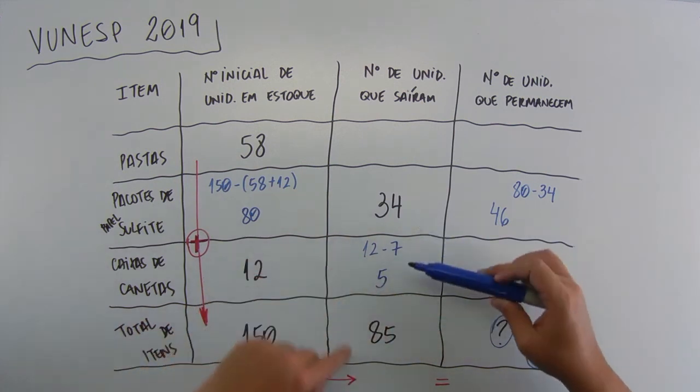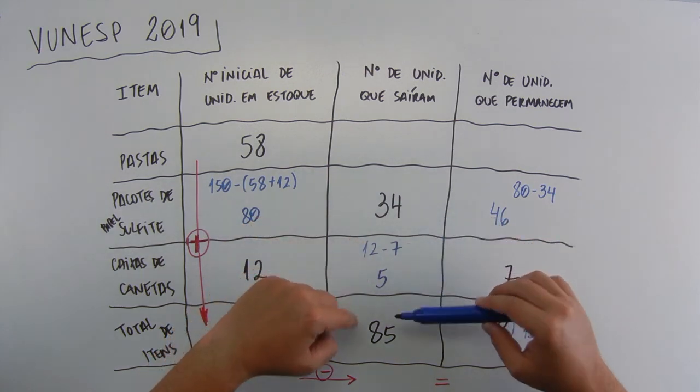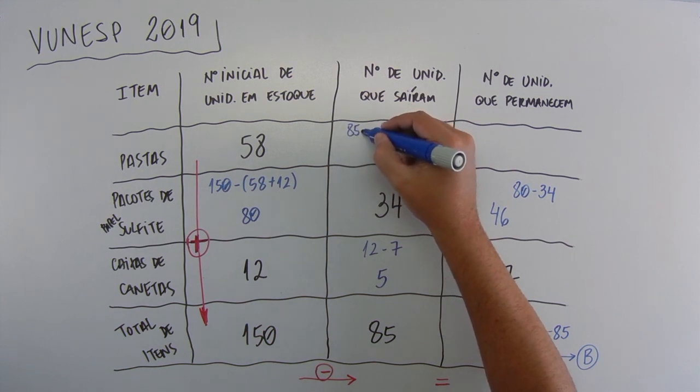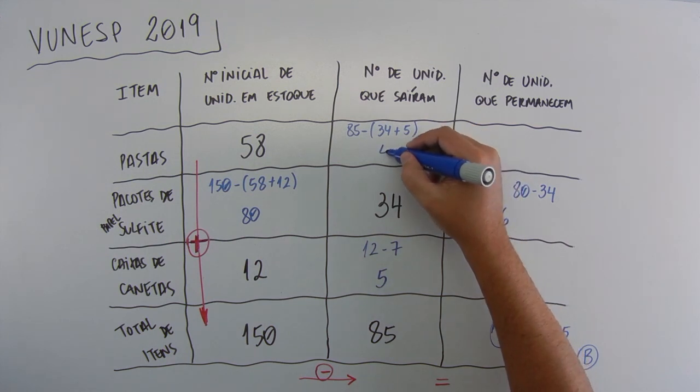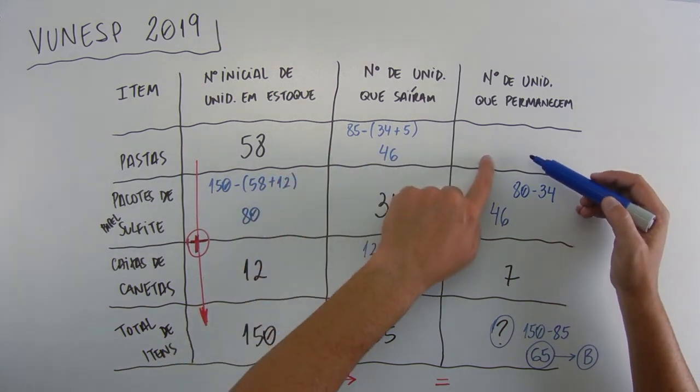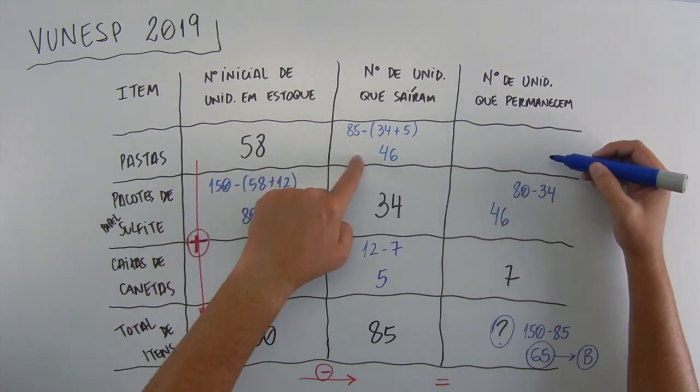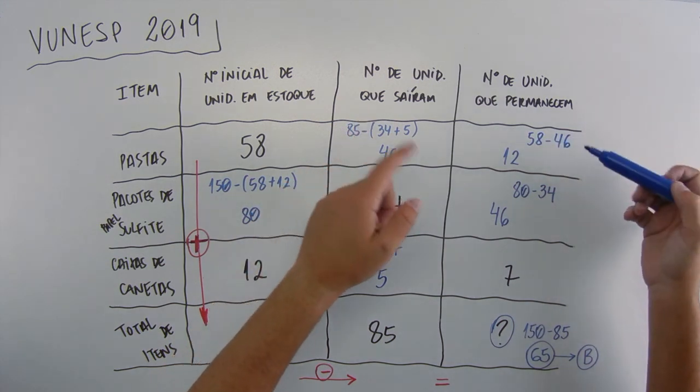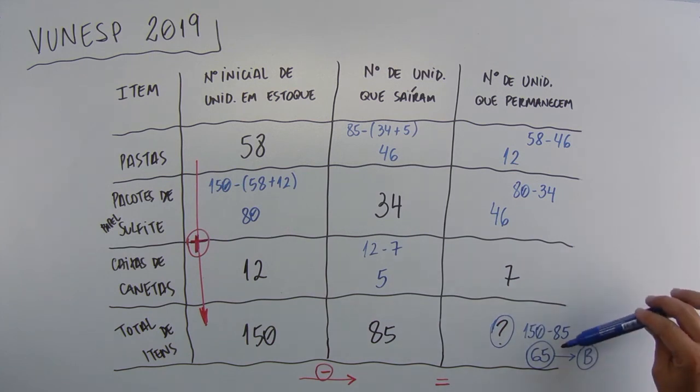From here to here, we subtract. Here, this entire column is the sum. So, 34 plus 5 plus something will give 85. And the calculation up here is 85 minus 34 plus 5, which will give 46. Here, 58 takes out 46, how much remains? We can already do this. So, here, 58 minus 46 will give 12. So, here is 58 minus 46. Then, if we sum 12 plus 46 plus 7, it will give 65, which was the problem's answer.